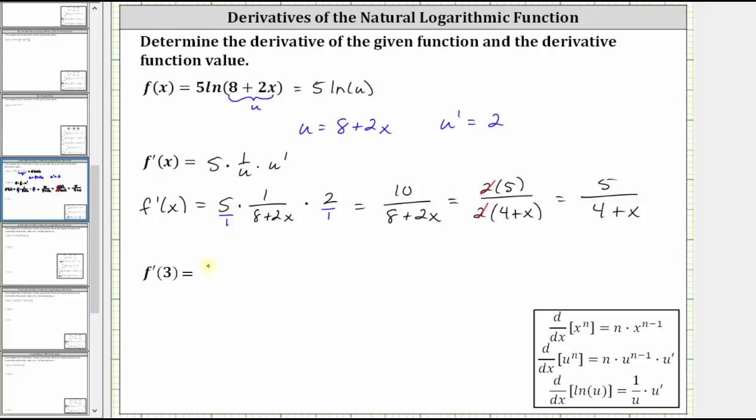Now to find f prime of three, we substitute three for x into the derivative function, which gives us five divided by the quantity four plus three, which simplifies to five sevenths.